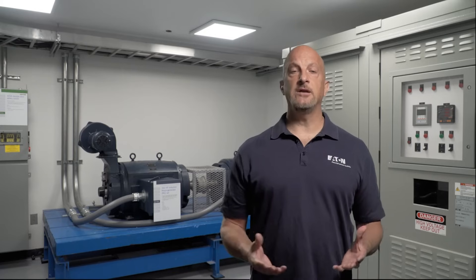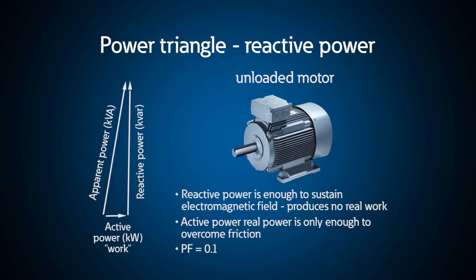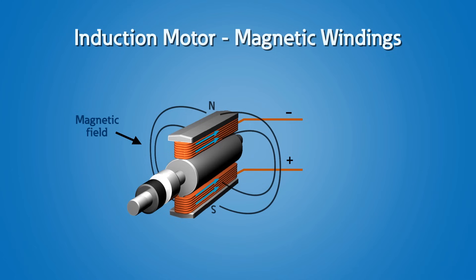For me, to understand what a VAR is, I personally like the following explanation using an induction motor. An induction motor needs a magnetic field to actually spin. So if you have an unloaded motor and apply voltage, the motor will spin but it's doing very little work — just enough to overcome friction. In order to make the motor spin, loaded or unloaded, you need a magnetic field. The power required to create this magnetic field is called reactive power, imaginary power, or VARs.